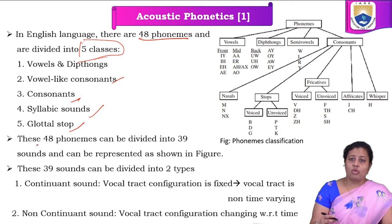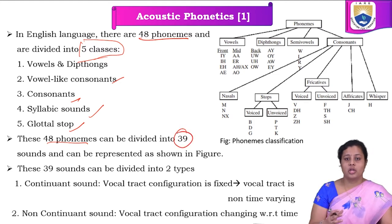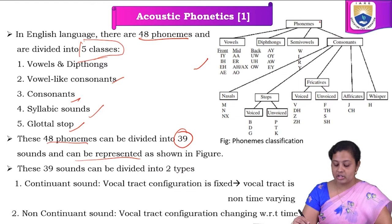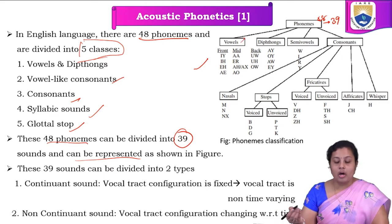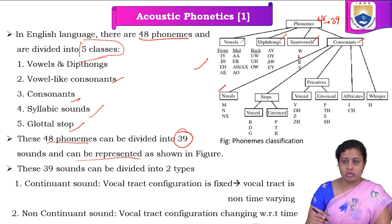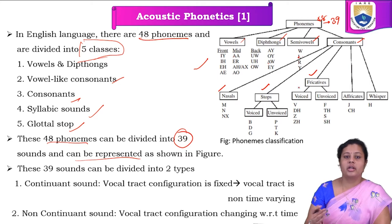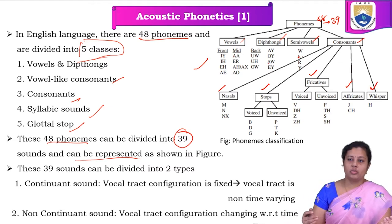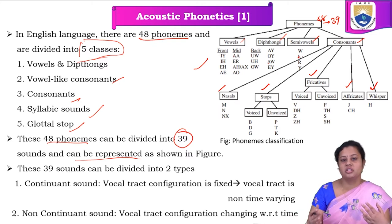These 48 phonemes can be divided into 39 sounds, and they are represented using a diagram. The 48 phonemes, represented by 39 sounds, can be classified into vowels, diphthongs, semi-vowels, and consonants. The major classes are four: vowels, diphthongs, semi-vowels, and consonants. Consonants are further divided into nasal sounds, stops (voiced and unvoiced), fricatives (voiced and unvoiced), and affricates. This is the phonemes classification for the English language.